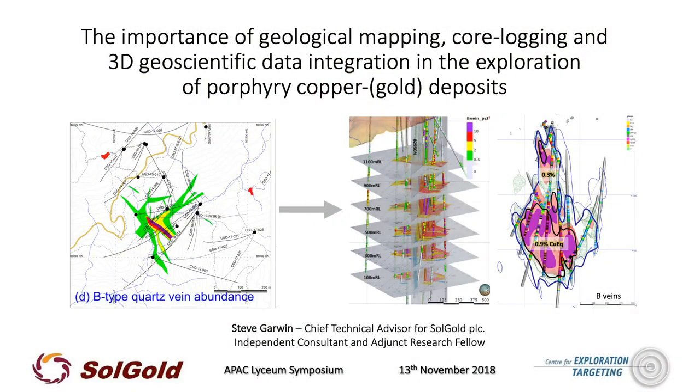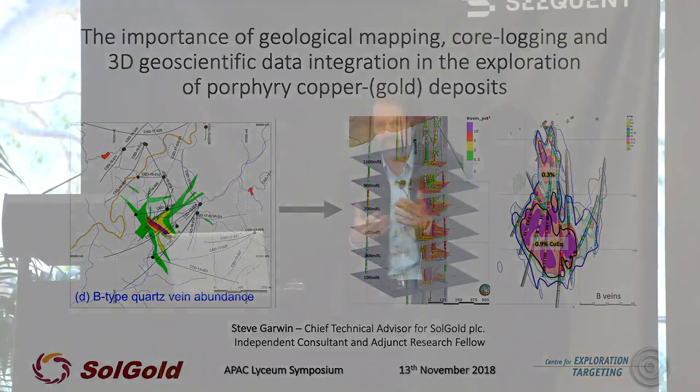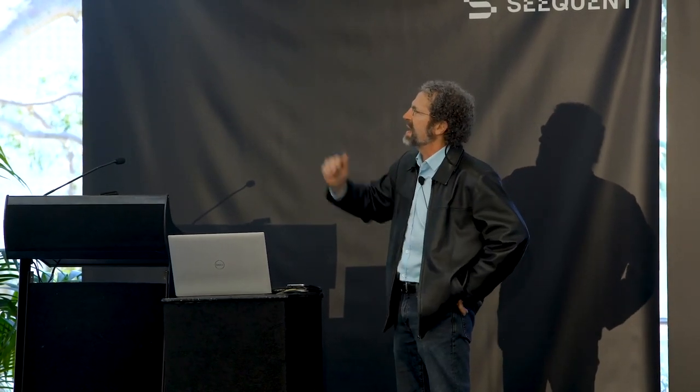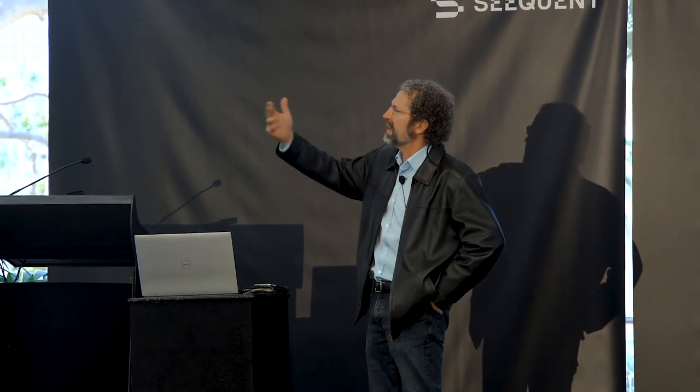How do you go from that discovery outcrop to that diagram on the left, which is basically just a map of quartz vein abundance? It's a particular type of quartz veins related to porphyries. The geologists mapped that outcrop, then made a series of cross-sections and level plans manually by hand, brought that into a 3D environment using SERPAC and, more recently, Leapfrog modeling to generate lithology models — in this case, a B-vein abundance model. The B-vein nomenclature was coined by Gustafson and Hunt in 1975 in their seminal paper on the El Salvador porphyry system in Chile.